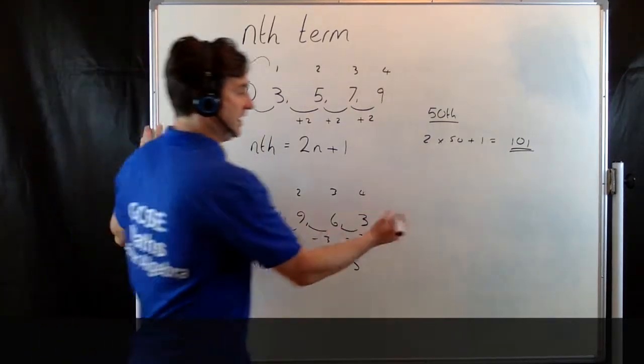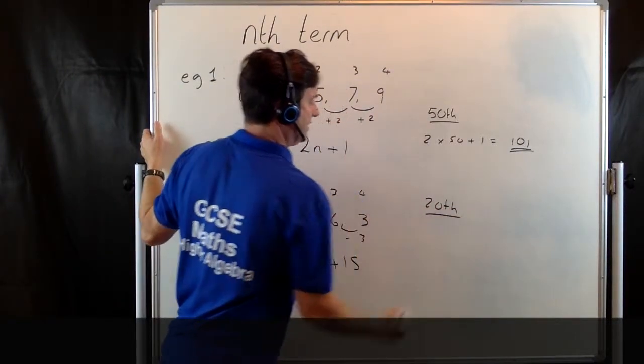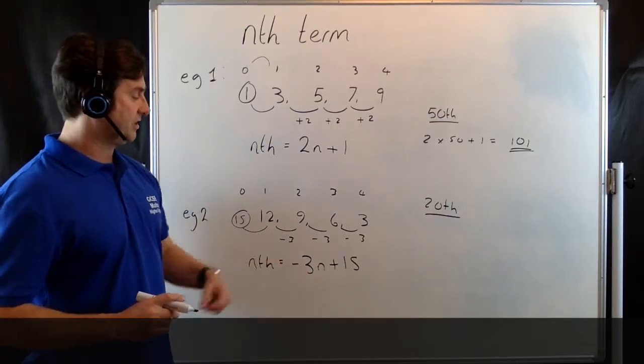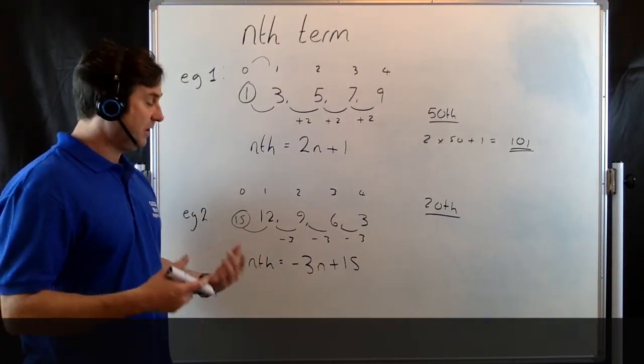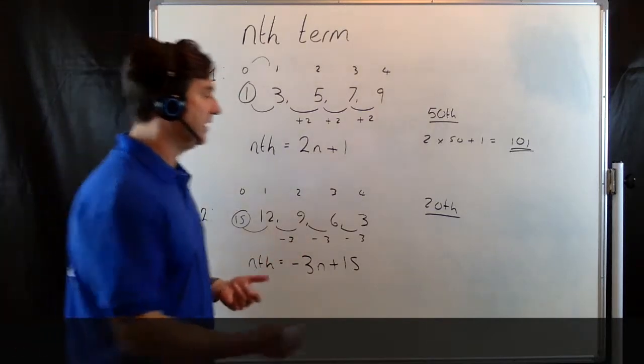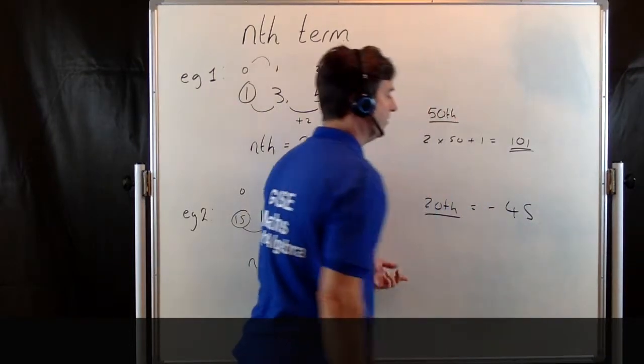Again, we could work out the 20th term. To find the 20th term, we just put 20 in place of n. Minus 3 times 20 is minus 60. Minus 60 add 15 takes us back up the number line to minus 45.